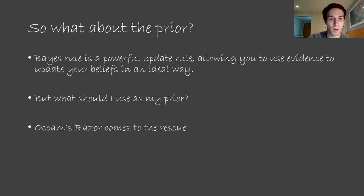In the last two videos, we introduced Bayes' rule, which is a powerful updating rule, allowing you to use evidence to update your beliefs in an ideal way. What this swept under the rug was how difficult it is to pick a prior distribution. What should be my prior set of beliefs before I observe any evidence?